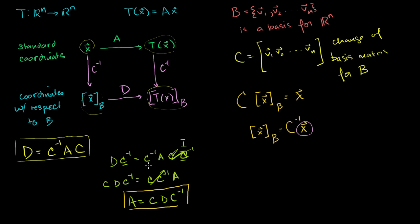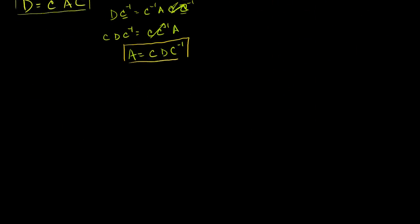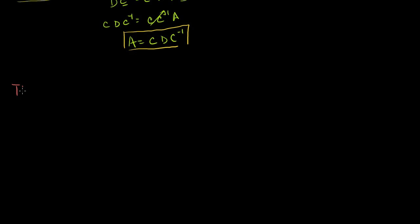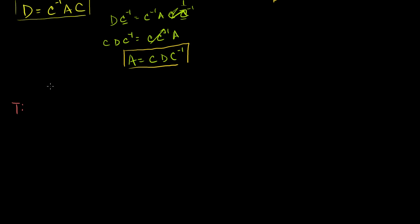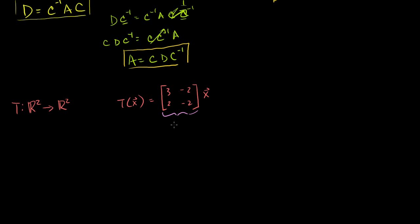Now let's apply some of these principles with a real concrete example. Let's say I have a transformation T, a mapping from R2 to R2. The transformation matrix for T in standard coordinates is the matrix [[3, -2], [2, -2]] times x. This would be our transformation matrix with respect to the standard basis — we'll call that A.